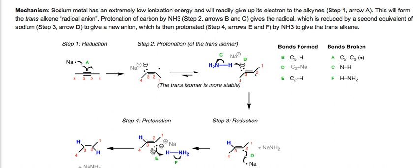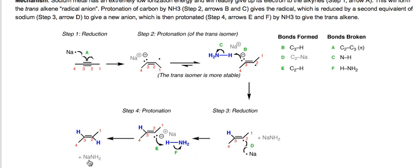And now that lone pair can react with another molecule of NH3. We can form a carbon-hydrogen bond here. We're going to break the hydrogen-nitrogen bond. And this is how our trans alkene comes to be. We formed the carbon-hydrogen bond on the opposite side. And again, we formed another equivalent of NaNH2.